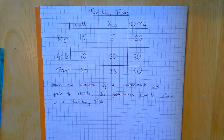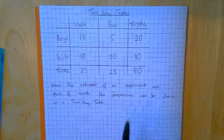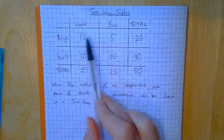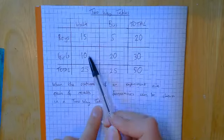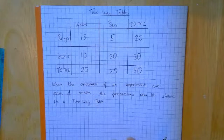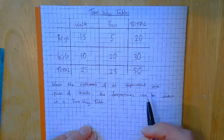So, like this experiment, we ask people if they were a boy or a girl and if they walked or got the bus. So one of the results was girl and bus. So our results come in pairs. And then we can write down the frequencies in our two-way table. So we never have anything in the two-way table apart from normal numbers like this, which we call the frequencies.